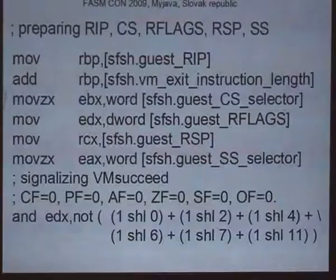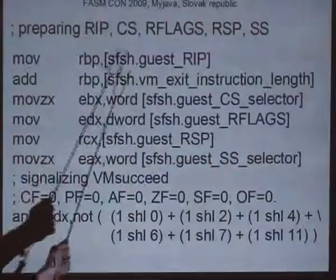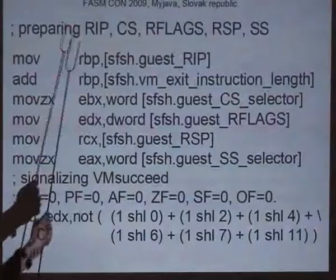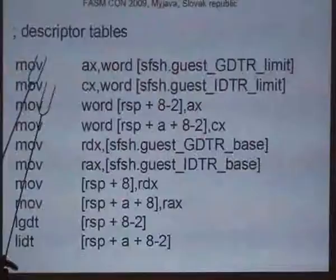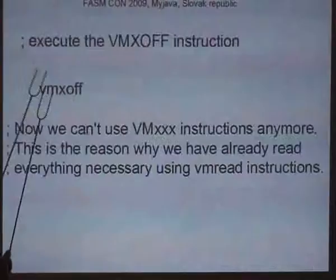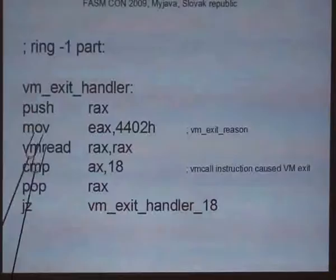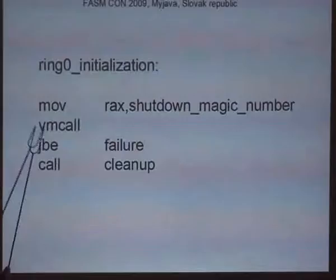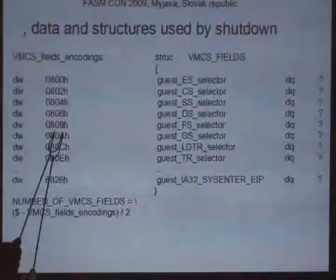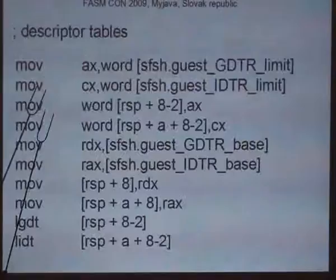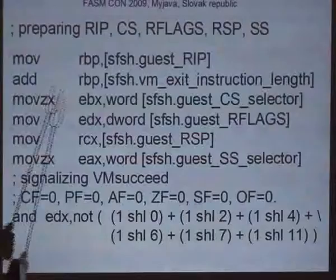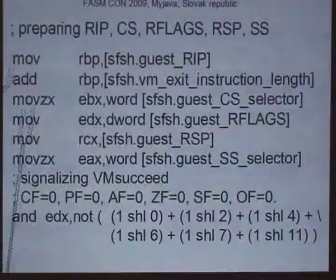We are going to finish with the last five registers we need to restore: instruction pointer, CS, RFLAGS, stack pointer, and stack selector. It is quite simple, except the instruction pointer must be calculated because it points to the beginning of the VMCALL instruction and we must add the instruction size to point to the following instruction. This instruction has size 3. So we load the current instruction pointer, add the instruction size, then load the CS selector, RFLAGS, stack pointer, and stack selector.